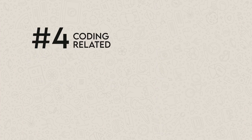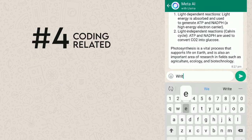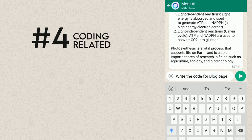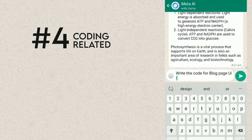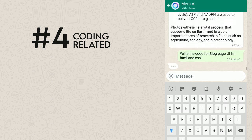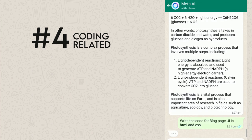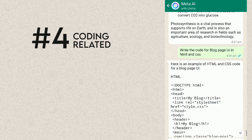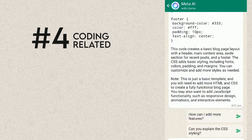Number four is coding. If you want to become a web developer or software developer, this tool will help you get started. Here is a basic example — let's ask WhatsApp Meta AI to write the code for a blogging page UI in HTML and CSS. Amazing result for beginners, right? You can also add more features by clicking this prompt — I'll leave that to you.